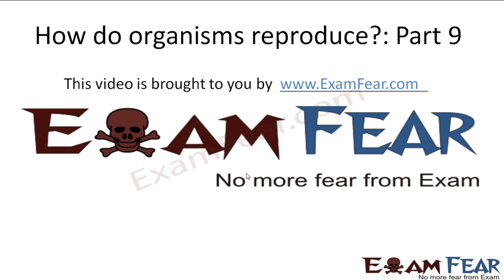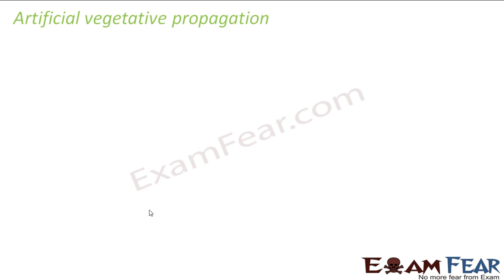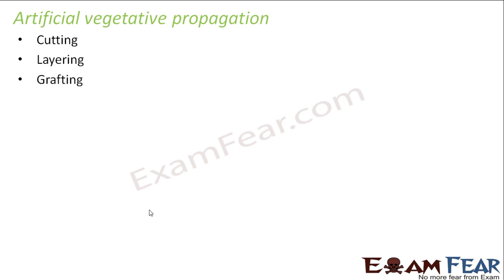Hello friends. This video on how do organisms reproduce, part 9, is brought to you by examfear.com — no more fear from exam. Let us now look at artificial vegetative propagation, that is, the different methods by which we can make more plants grow. We will talk about cutting, layering, and grafting.